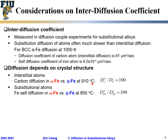On the other hand, for self-diffusion — iron in iron — in alpha iron versus in gamma iron at the same temperature, 850°C, if the iron is packed as body-centered cubic BCC, it's much faster. So we see the diffusion coefficient for interstitial is much higher than for substitutional, and even for the same atoms it depends on the crystal structure — whether it's interstitial or substitutional.